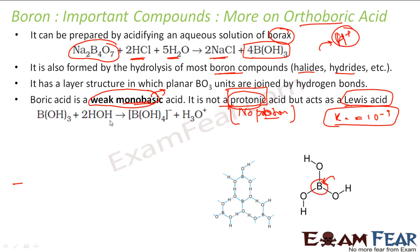When boric acid reacts with water, water has an extra electron pair which the electron-hungry boron accepts, making it acidic. Please understand this critical concept: boric acid is an acid, but not a protonic acid. It does not have extra protons to donate. It is acidic simply because boron accepts an electron pair — it is a Lewis acid.